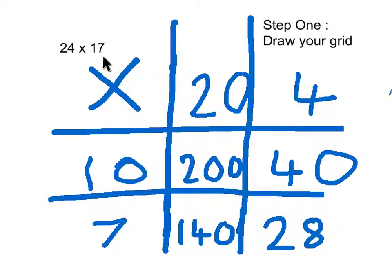We are going to do 24 times 17. You always put the biggest number at the top of the partition of numbers. So 20 and 4 for 24, 10 and 7 for 17.